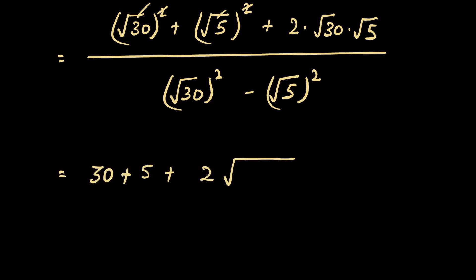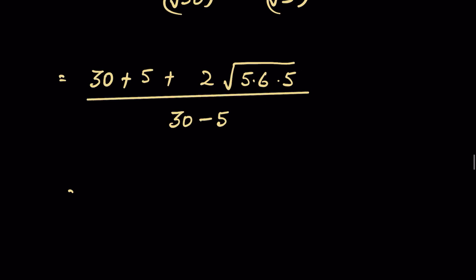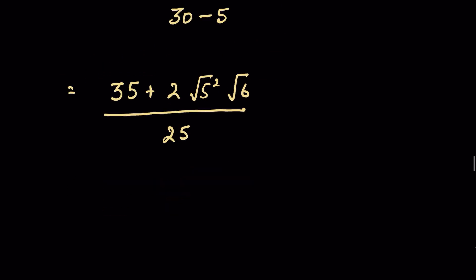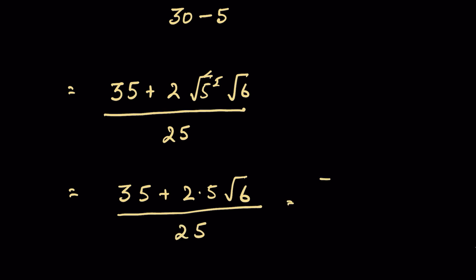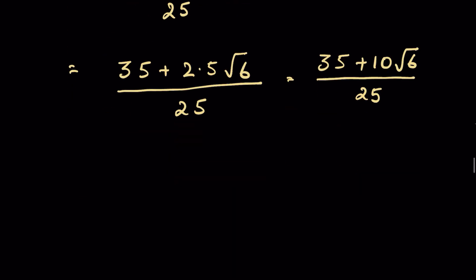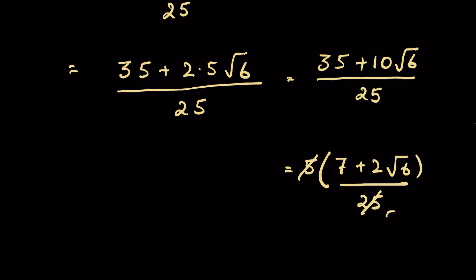The numerator becomes 30 + 5 + 2√(5 × 6 × 5) upon 30 − 5, which is 35 + 2√(25 × 6) / 25. Removing the square root with the square gives 35 + 2 × 5 × √6 upon 25, or 35 + 10√6 upon 25. Factoring out 5 gives 5(7 + 2√6) / 25.